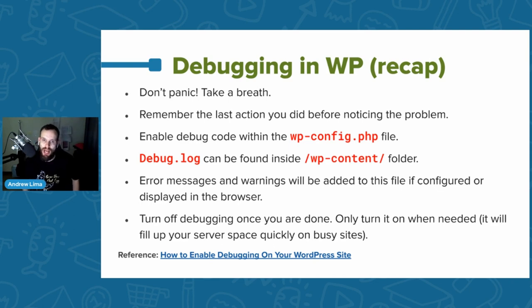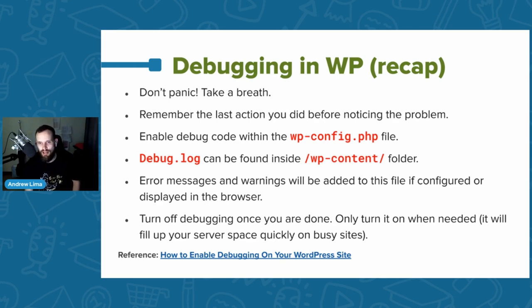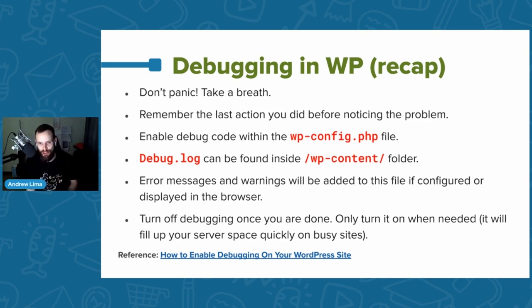Error messages and warnings will be added to the debug log file if configured, or displayed in the browser. I showed you the first issue displaying in the browser as that scary message, and then we changed it to write to the debug log instead. Once you're done, turn off debugging and only turn it on when you need it. I cannot stress enough that I've seen WordPress sites fill up their entire server space with a debug log — running out of space so you can't even upload a photo.